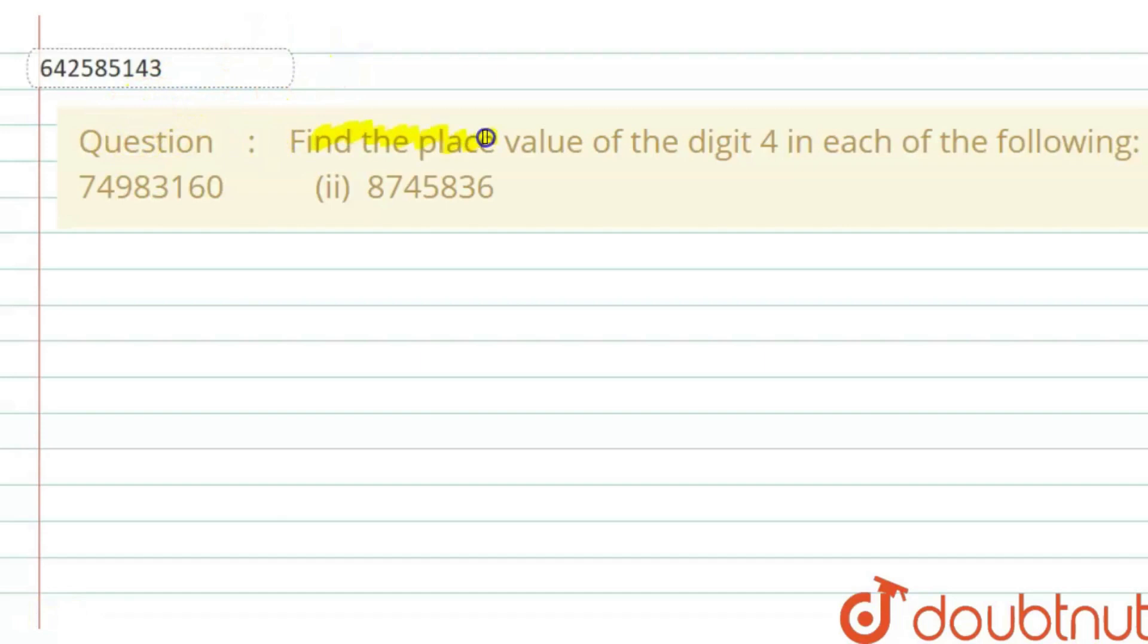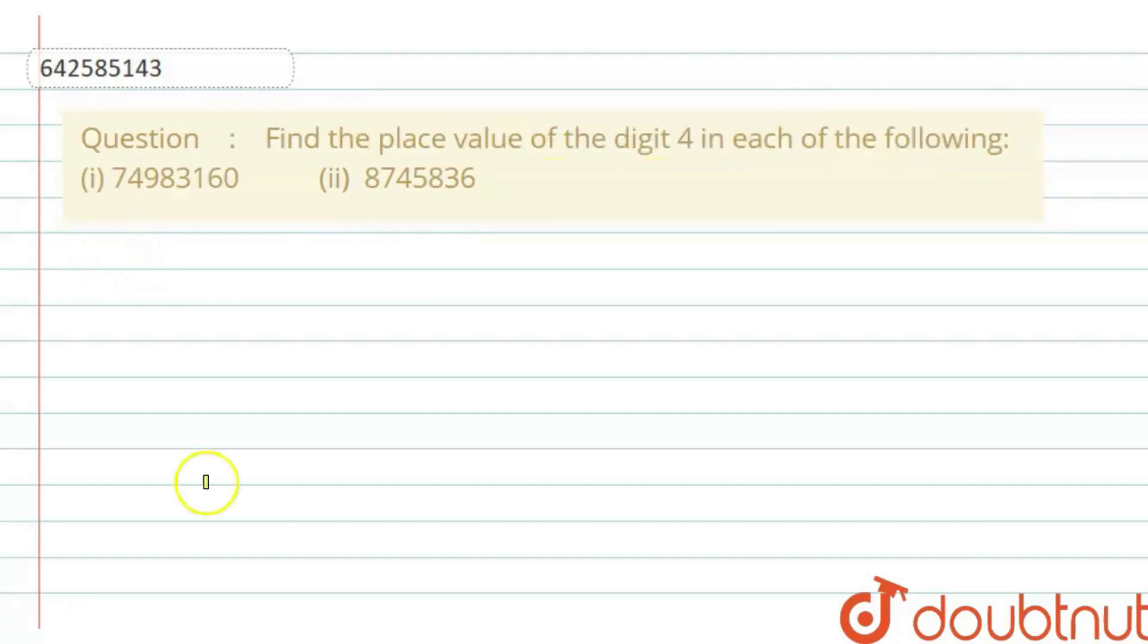Hello everyone, so the question is find the place value of digit 4 in each of the following and we are given with two parts. Okay, now let's proceed one by one.